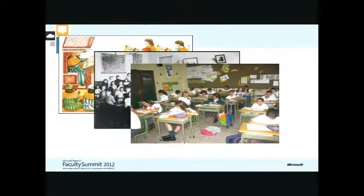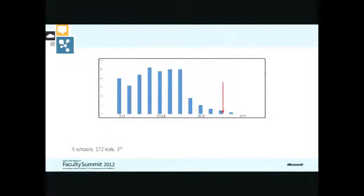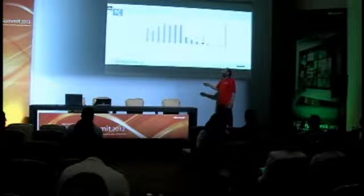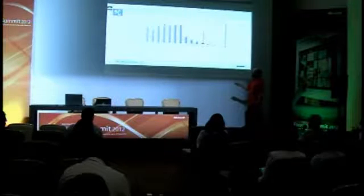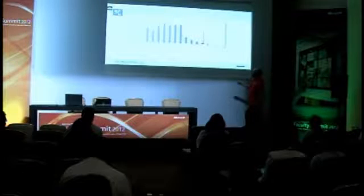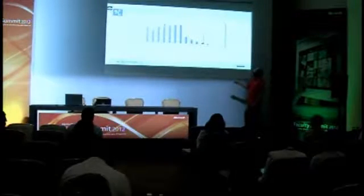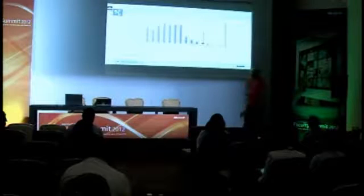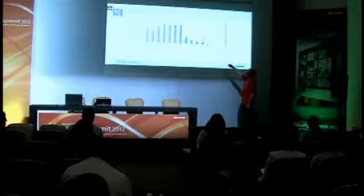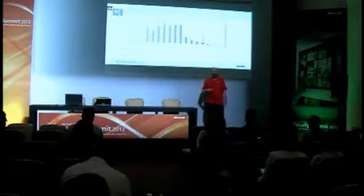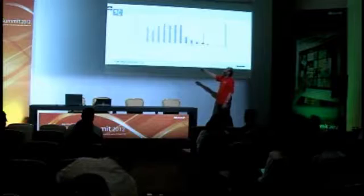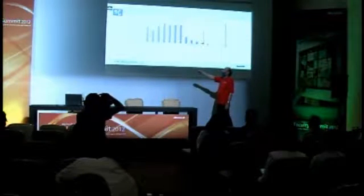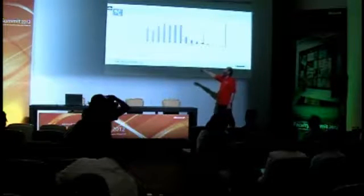And the consequences of this — we measured this last year and got really amazing data. This was measured in five schools with 172 kids at the end of third year. Here you have the national curriculum of Chile for the first, second, third, and fourth year. These kids were assessed at the end of third year, and what you see on the vertical axis is the number of children that achieved those contents. That means only 20 kids really know the contents of the second trimester of first grade — they don't know anything from there on.